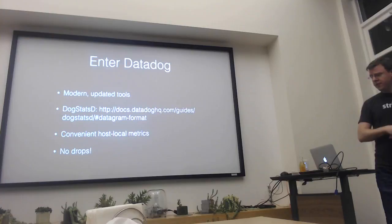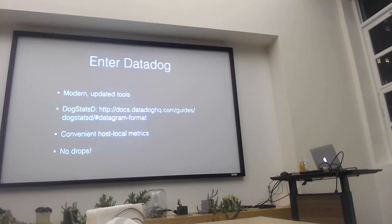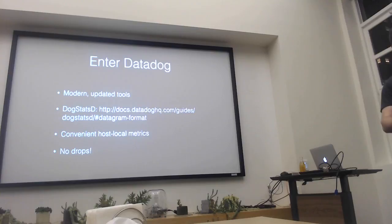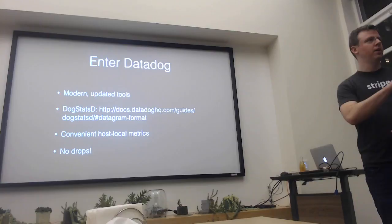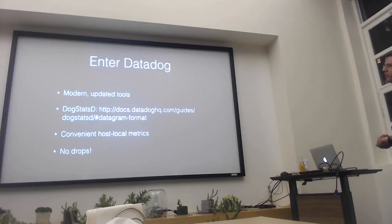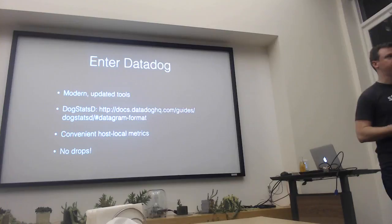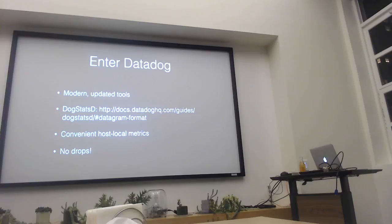DogStatsD is basically a superset — it's more features added on top of StatsD. It's still UDP. It's still a text-based protocol. But it uses tags instead of dotted names. It's also got some other primitives in addition to just metrics. Datadog runs a version of the DogStatsD server on every machine in your fleet. So when you run StatsD, you run a StatsD — or maybe if you're super fancy, you'll run a sharded StatsD with smart clients, or maybe a StatsD proxy.